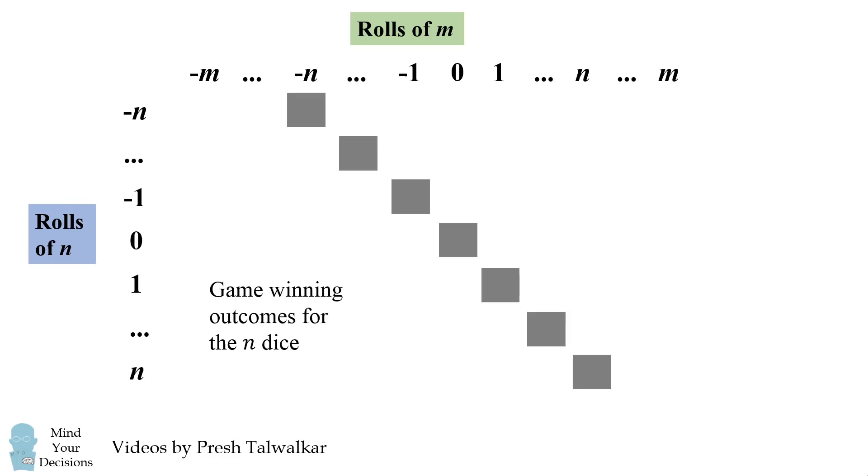Every outcome to the left of this diagonal will be a game-winning outcome for the n dice, and every outcome to the right of this diagonal will be a game-winning outcome for the m dice. In fact, there will be a one-to-one correspondence between these outcomes.